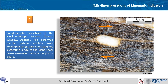The first example is from conglomeratic calc-schists of the Piocher nappe in the Tauern window in Austria. You see a pebble of pure calcite marble which is recrystallizing and feeding wings which make a beautiful stair-stepping, so you can interpret this as some kind of a mantled sigma-type porphyroclast, and the shear sense is clearly top to the right.